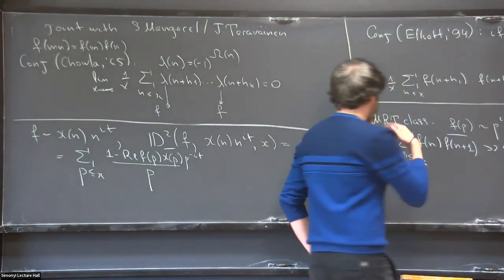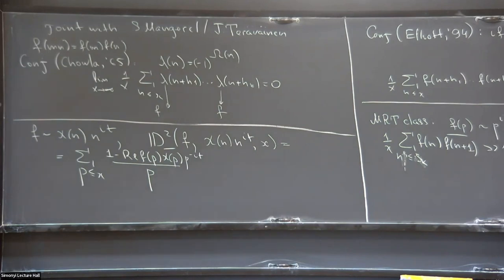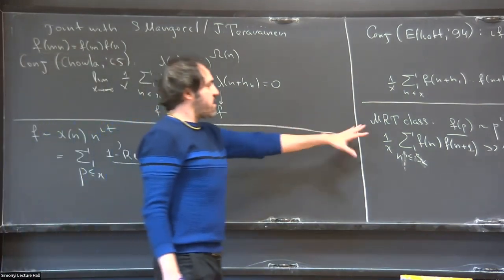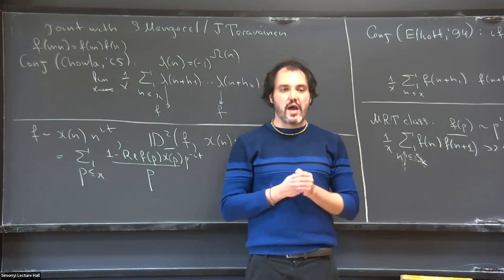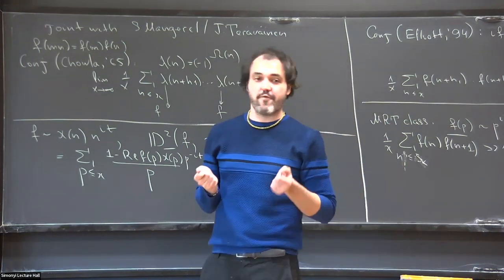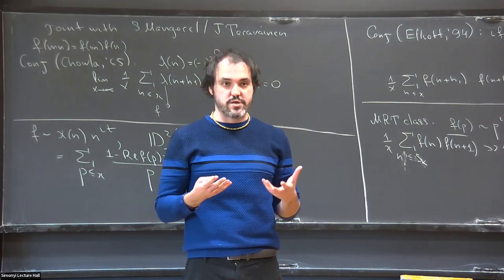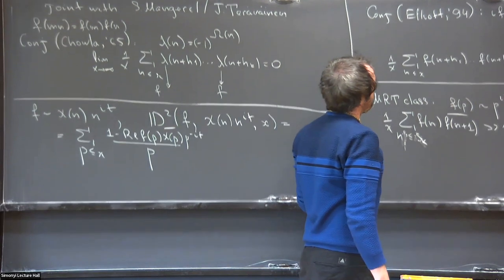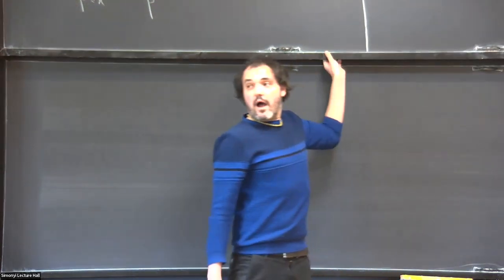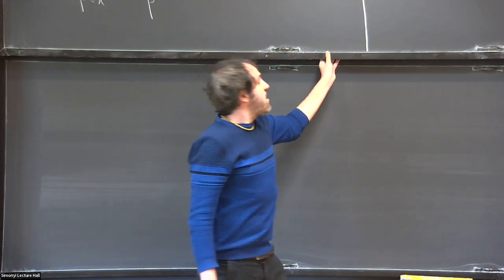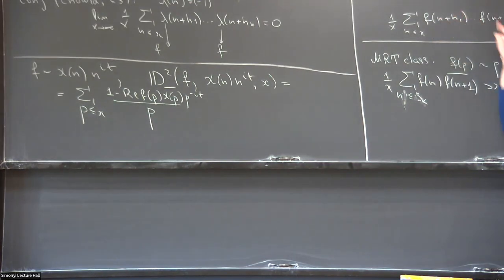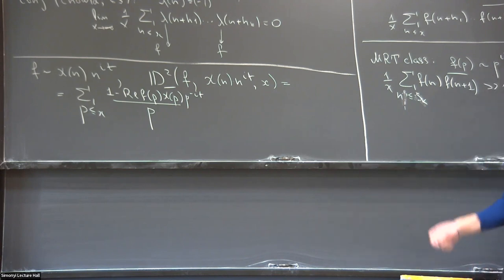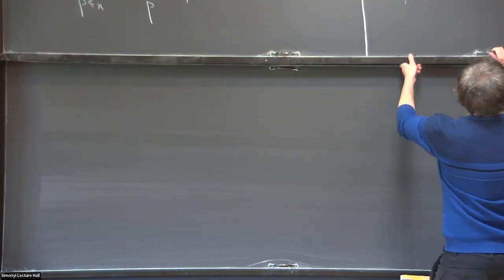But if you take very spread-out scales s_k, there is not a single n^{it} to which you're close — you keep retaking different characters and on different scales you look very different. This was a motivating class of functions. What became clear, motivated by questions at an AIM workshop on disjointness in 2018, is that the right way to look at the Elliott conjecture for general functions is to look at subsequences or scales.